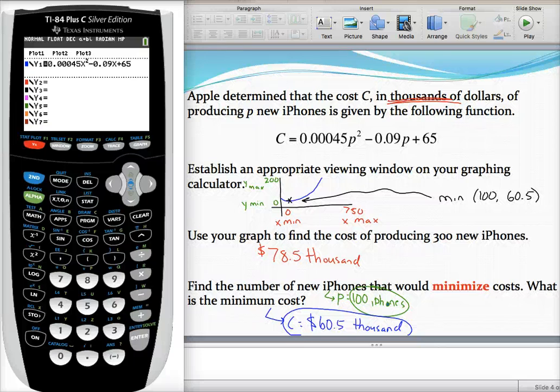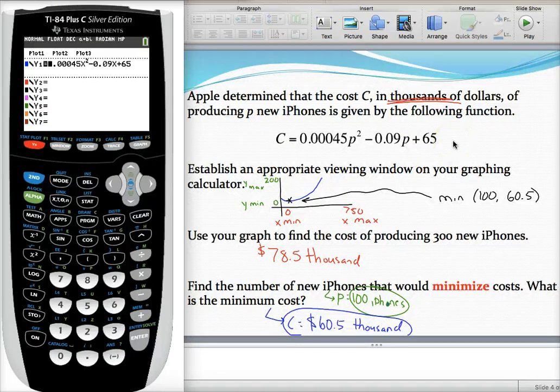In this example, we're going to look at finding a minimum cost given a quadratic equation. We've done a problem like this where we tried to maximize something. In this case, we're going to minimize something.